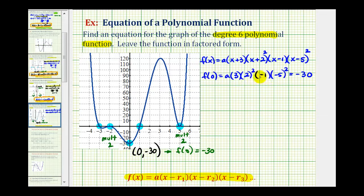We'll simplify and solve for a. We'd have 3 × 4 = 12, × -1 = -12, × 25 = -300. So we have -300a = -30.